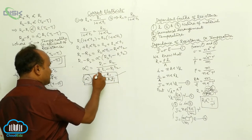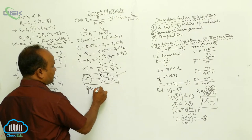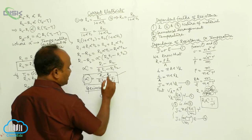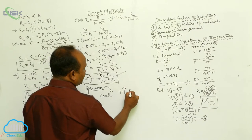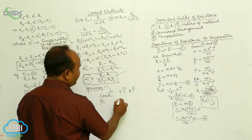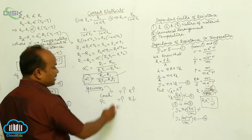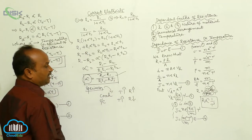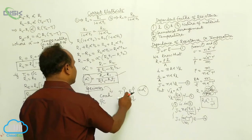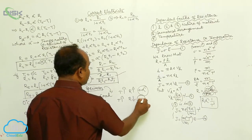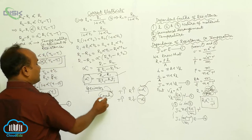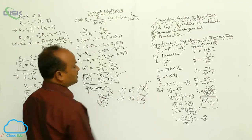Resistance is the property of the specimen. If the specimen is a conductor and temperature is increased, the resistance is also increased — the temperature coefficient of resistance is positive alpha. If the specimen is a semiconductor and the temperature is increased, the resistance is decreased — the temperature coefficient of resistance is negative. Therefore, for conductors, the temperature coefficient of resistance is positive, and for semiconductors it is negative.